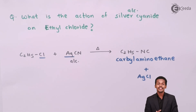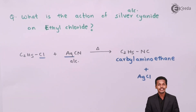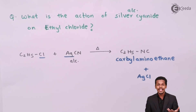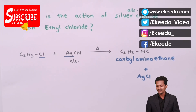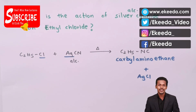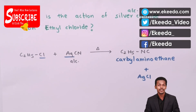So these are the reactions of alkyl halide with alcoholic KCN solution as well as alcoholic AgCN solution, to obtain an alkyl cyanide and an alkyl isocyanide respectively. Thank you friends for watching this video. I hope you have understood it clearly and will share it with your friends. Don't forget to subscribe to the Ikeda channel. Thank you so much.